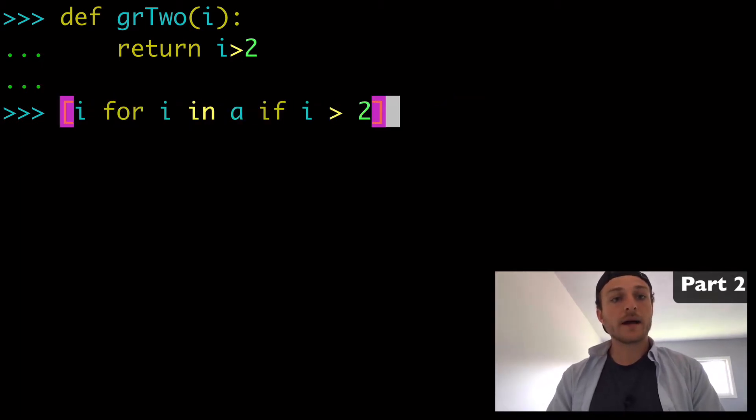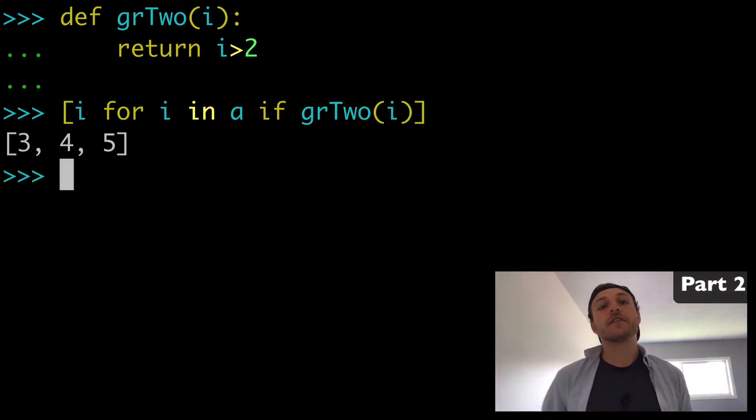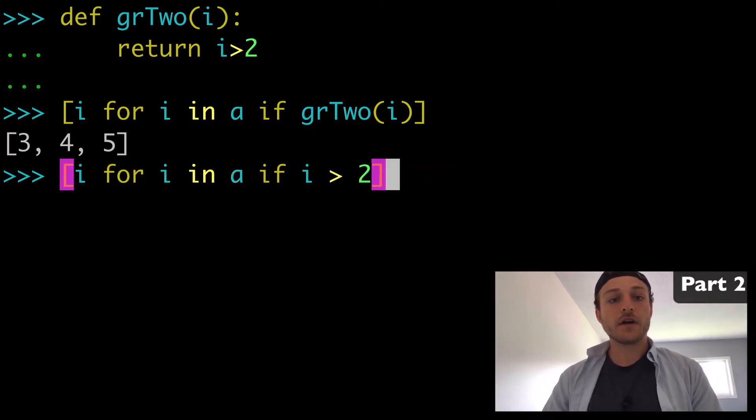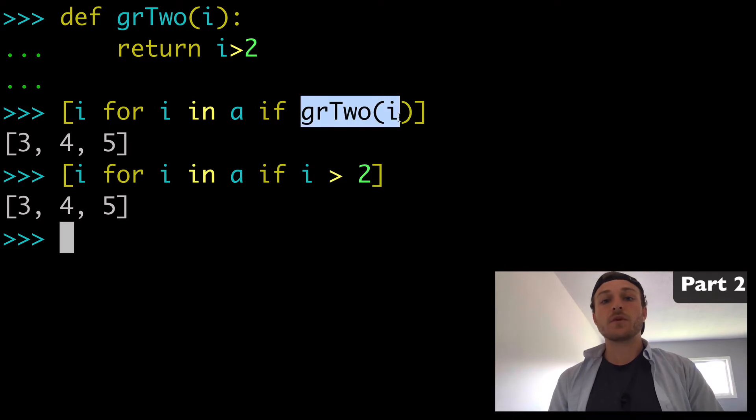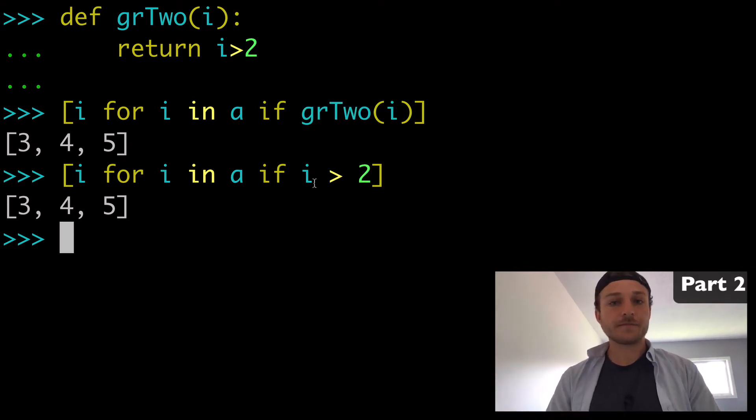And we can bring back our list comprehension here. And instead of doing if i greater than 2 explicitly, we can wrap greater than 2 around. And that should give us the exact same thing. So just to show them both side by side. Here we're using an if statement and doing the filtering manually. And then here we're using our function. So two ways to use list comprehensions with filters. One with the function and one just writing if statements.